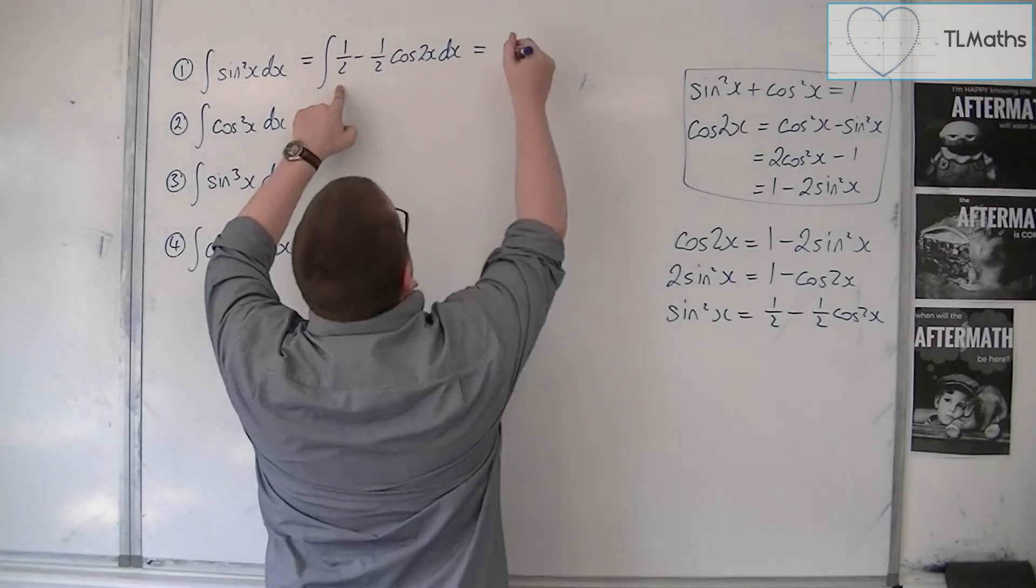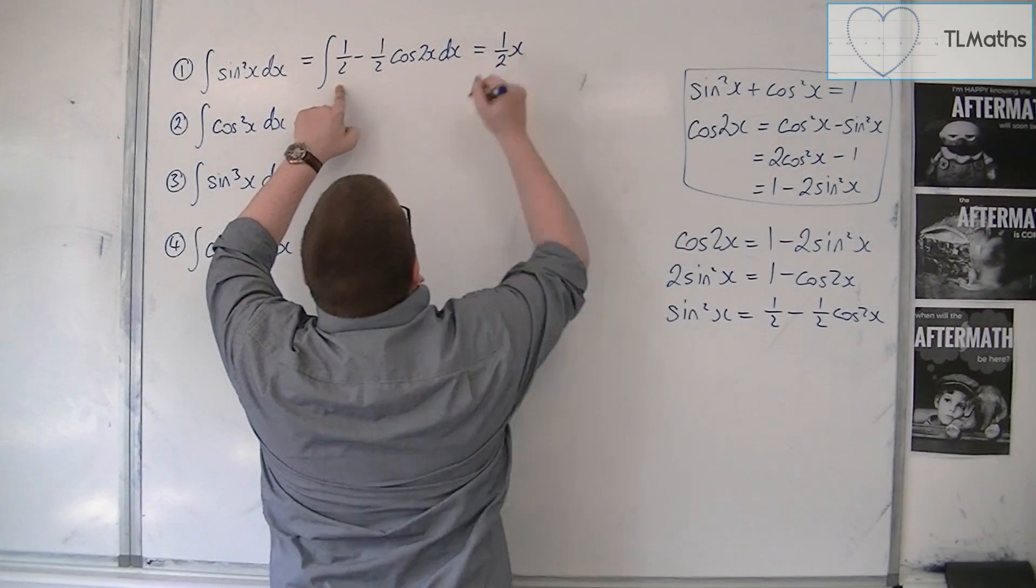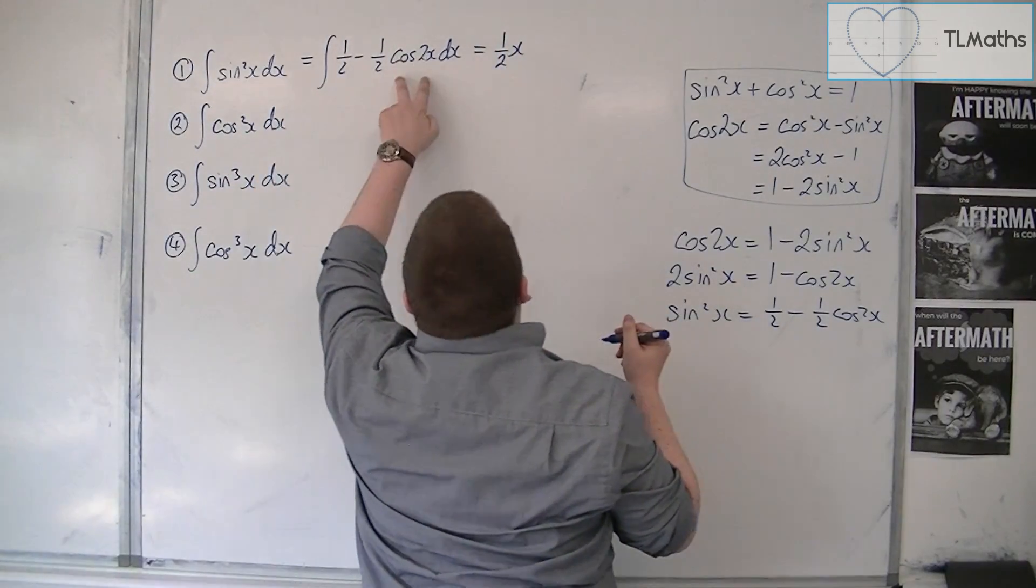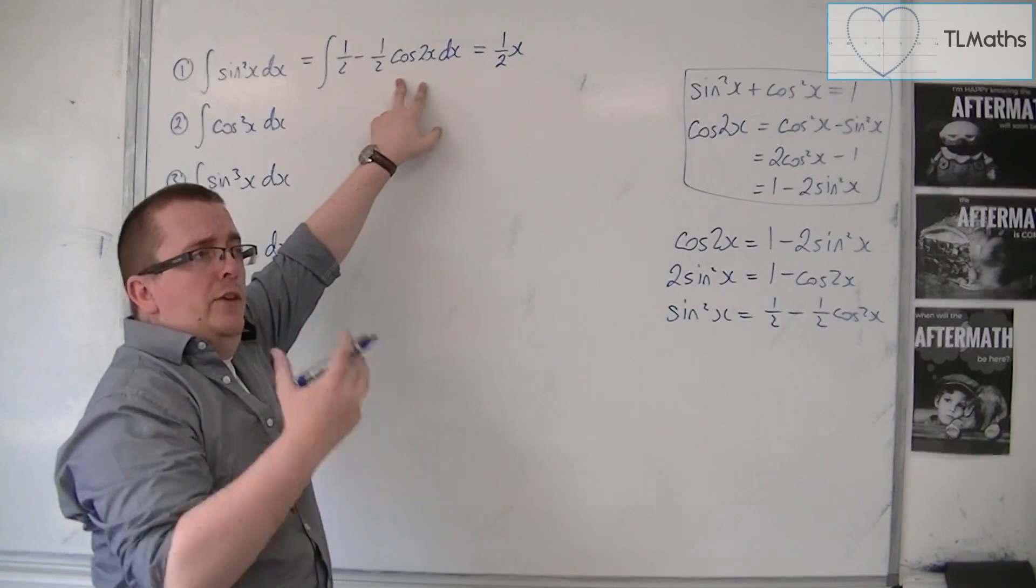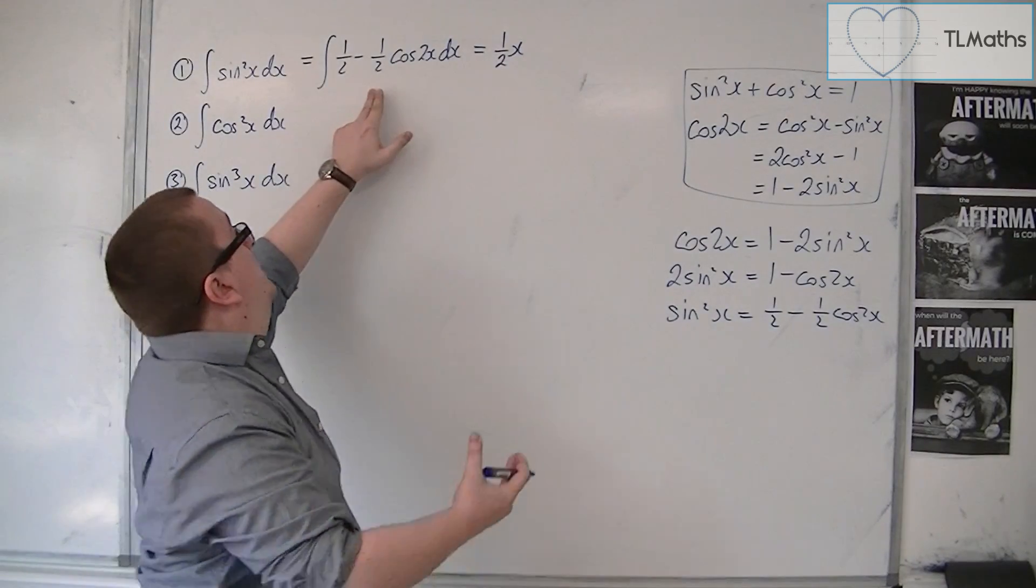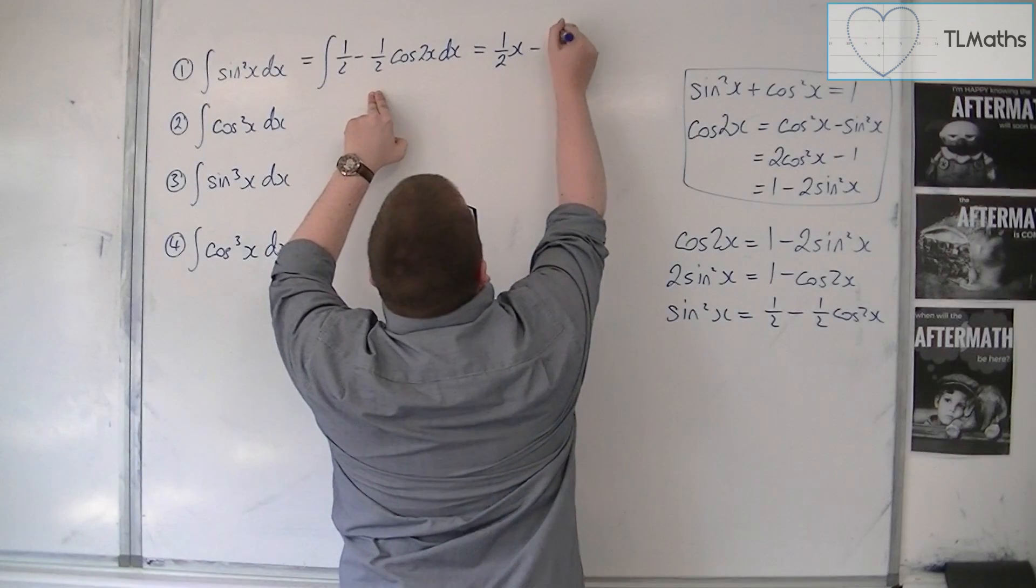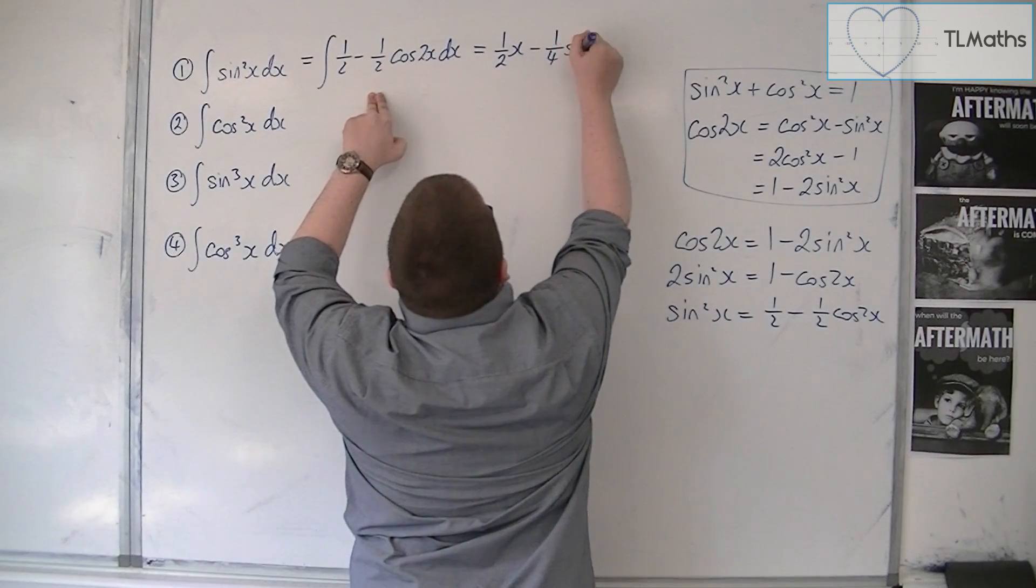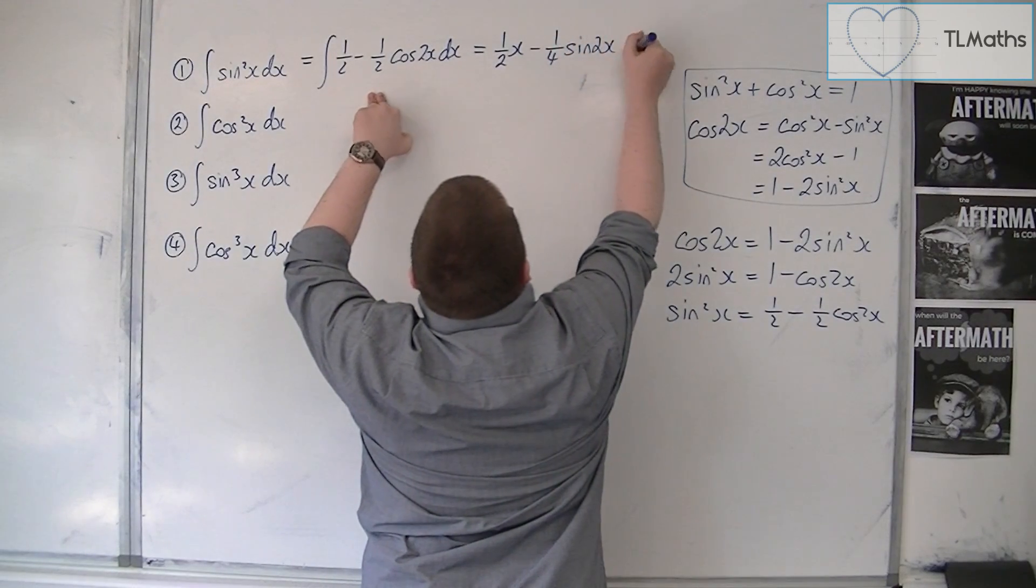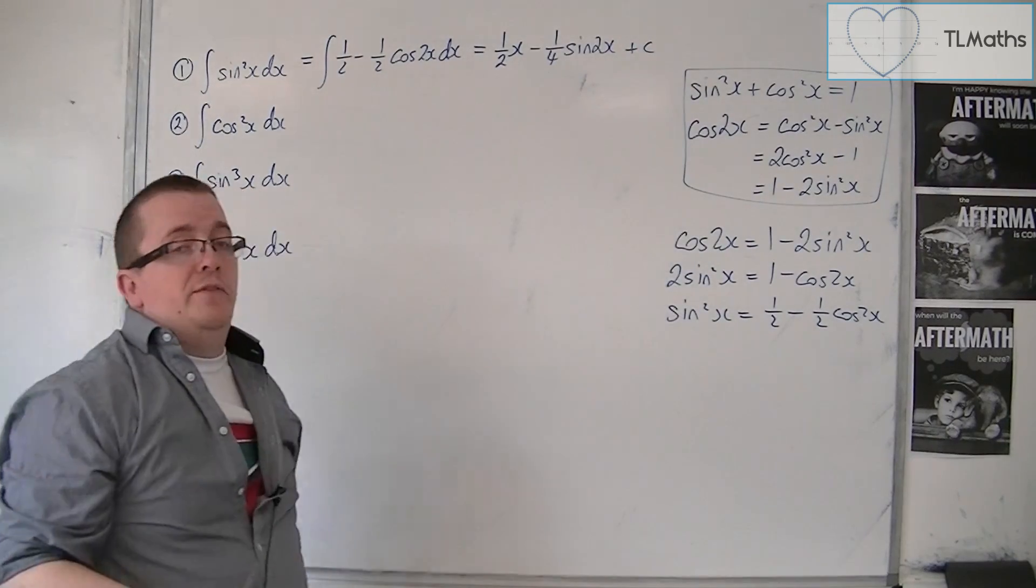So a half integrates to a half x. Now the half cos2x. Cos2x integrates to a half sine2x. So a half of that is a quarter. So minus a quarter sine2x. And we're going to have that plus c constant of integration.